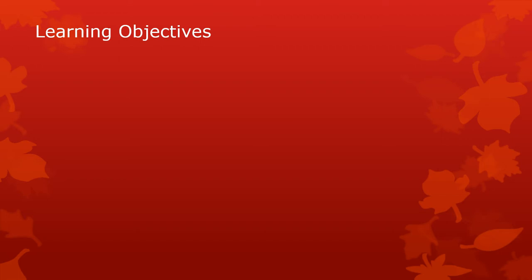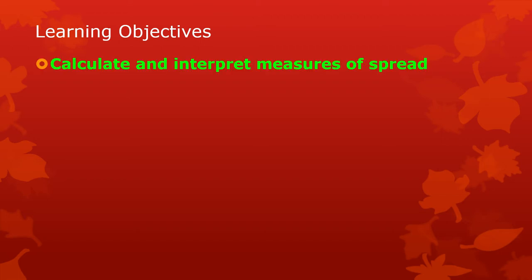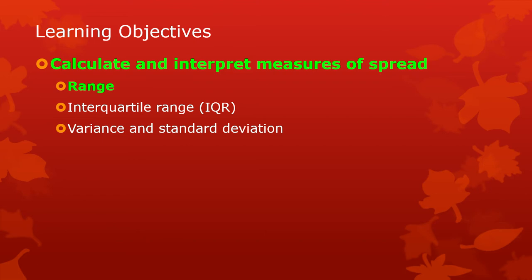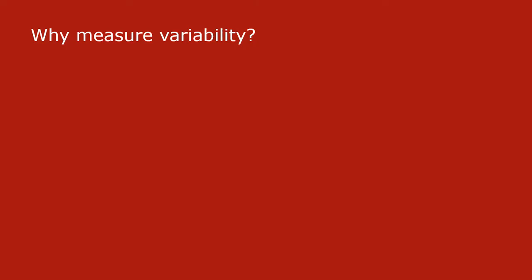Variability can also test hypotheses about centers, but we'll get into that later. So the learning objectives: you need to learn how to calculate and interpret measures of spread. Variability is sometimes called spread — they're synonyms. The first one we'll talk about is the range, which is very easy. Later we'll talk about the interquartile range, the IQR, and the variance and the standard deviation, which are basically the same thing.